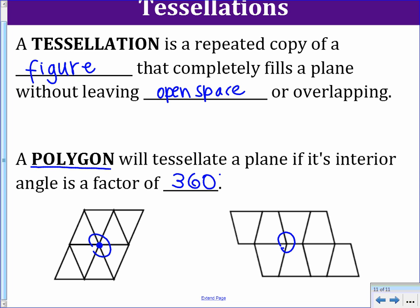To summarize, the key things to know are the types of transformations — translation, reflection, rotation, and dilation — the types of symmetry — point symmetry and line symmetry — and what a tessellation is.